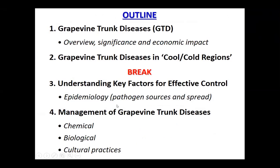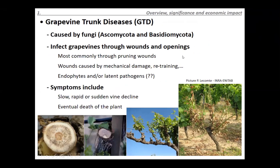Grapevine trunk diseases are caused by many different fungal pathogens, most of them in the Ascomycota, but also some Basidiomycetes — the mushroom-like fungi — involved in this complex. One of the most characteristic things is that these diseases infect the vine through any type of openings and wounds. Since we have to prune grapes every year, pruning wounds are the most common point of entry. We are also studying whether these fungi act as endophytes or latent pathogens, as we sometimes find them in asymptomatic wood with no symptoms.